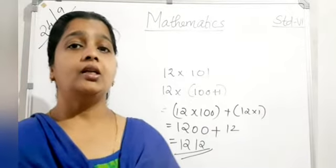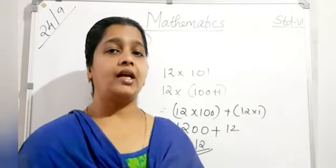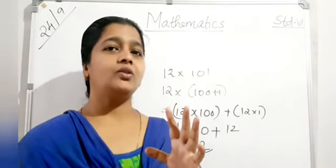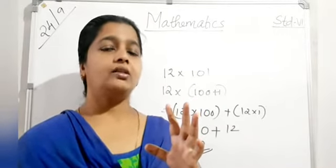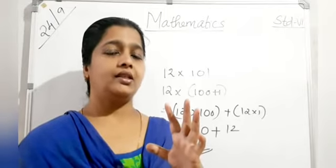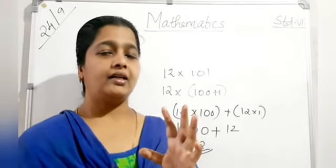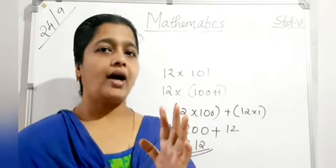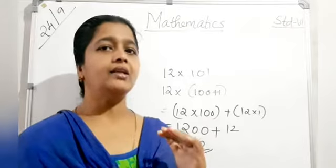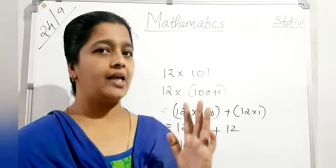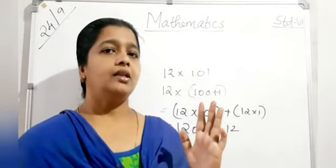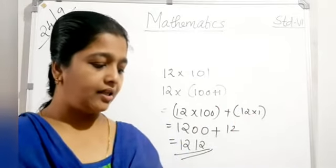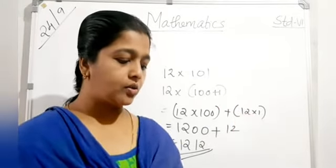Using suitable rearrangement, arrange numbers for easier multiplication: for example 2 × 50 = 100, 4 × 25 = 100, 5 × 20 = 100. I have given this in the notebook. You must arrange the numbers and multiply. Also study the true or false questions from that chapter.